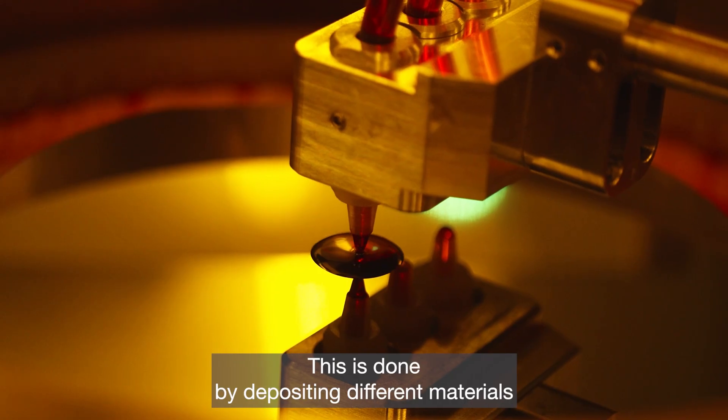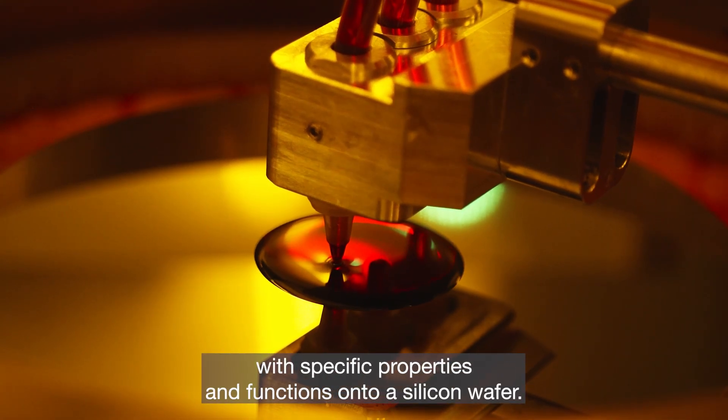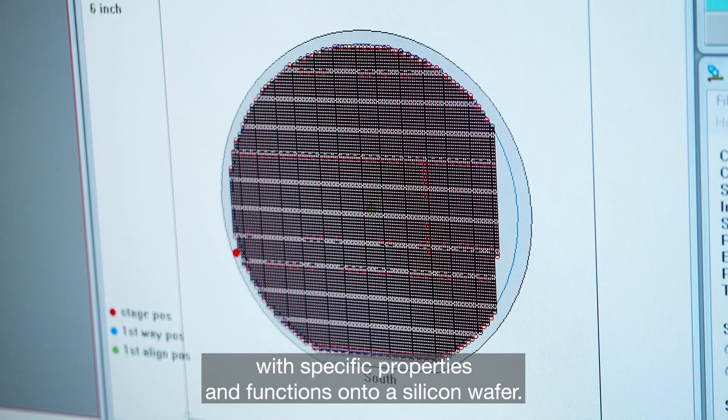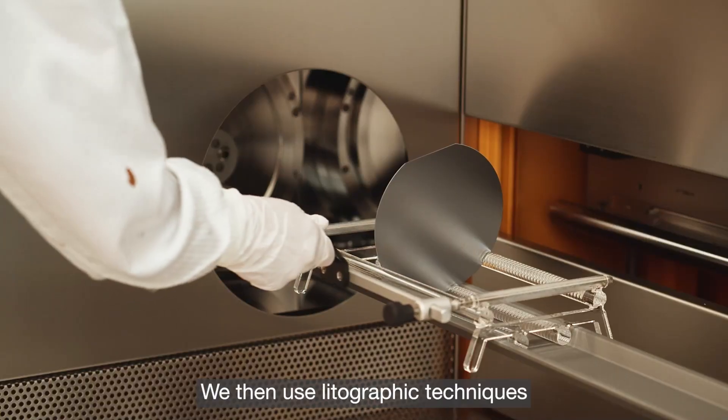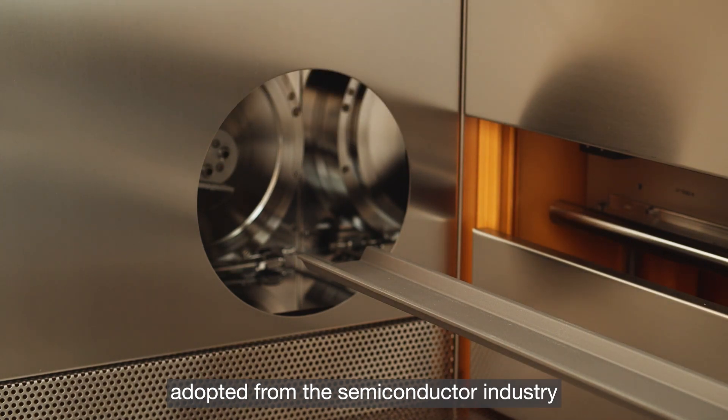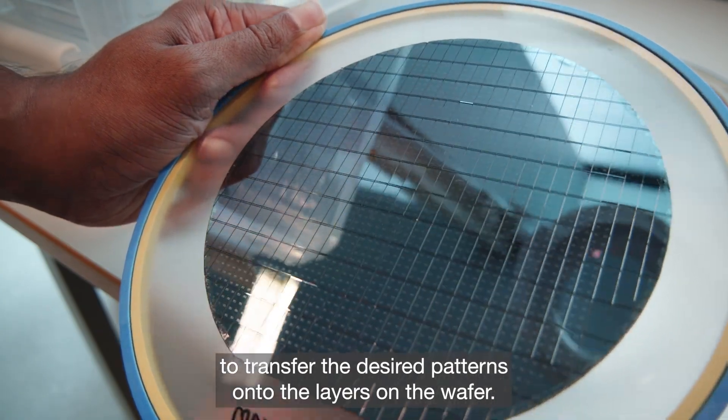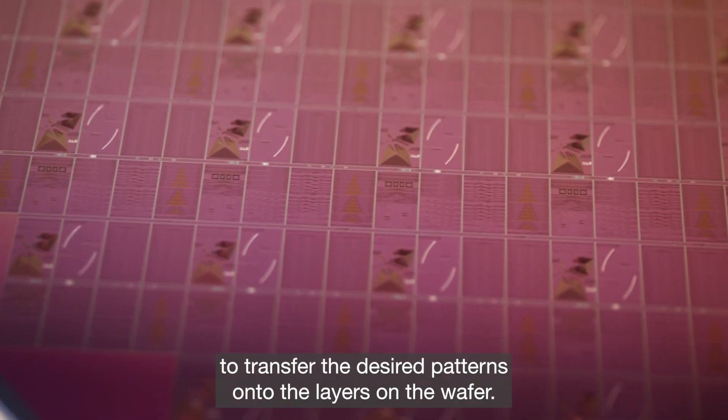This is done by depositing different materials with specific properties and functions onto a silicon wafer. We then use lithographic techniques adopted from the semiconductor industry to transfer the desired patterns onto the layers on the wafer.